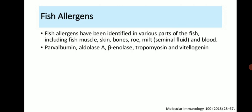Fish allergens have been identified in various parts of a fish including fish muscles, skin, bone, roe, milk, seminal fluid and blood. Key allergens include: parvalbumin, aldolase A, beta-enolase, tropomyosin and vitellogenin.